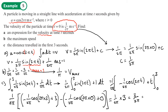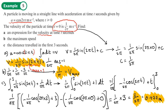Converting to a decimal gives 0.477464, so to three significant figures the distance traveled is 0.477 meters. That is the answer to part c. Part b was the maximum velocity of 1/π, and part a was the expression for velocity.